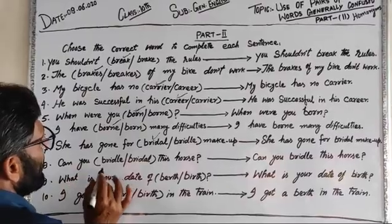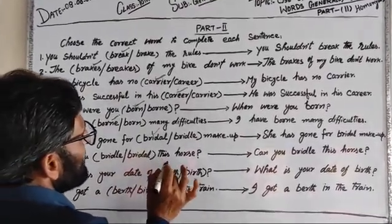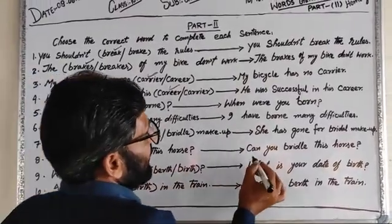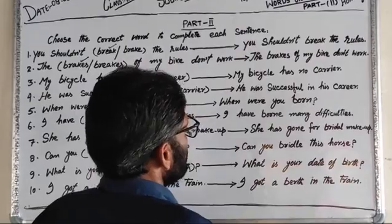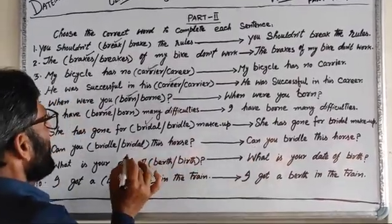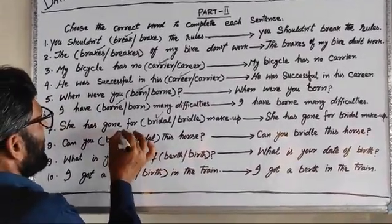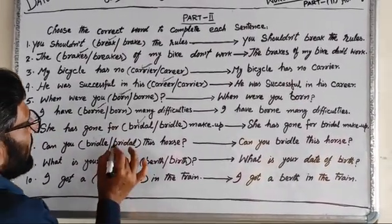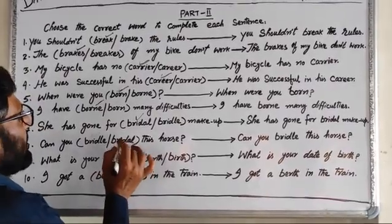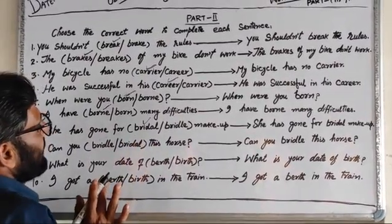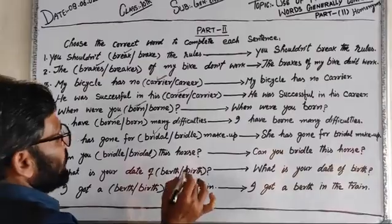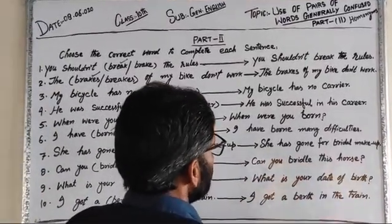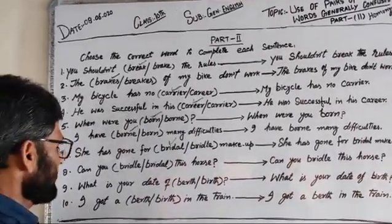Number eight: 'Can you bridle this horse?' Bridle — B-R-I-D-L-E — refers to the harness used on a horse, while bridal — B-R-I-D-A-L — means bride-like or related to a wedding. So the sentence is: 'Can you bridle this horse?'